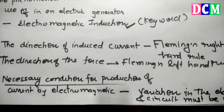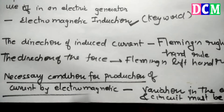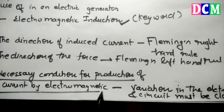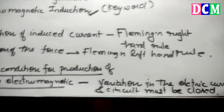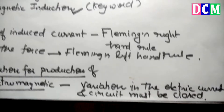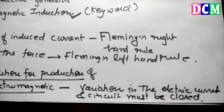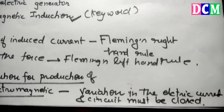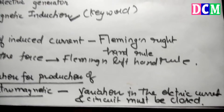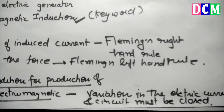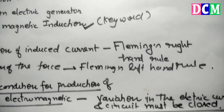The necessary conditions for the production of current by electromagnetic induction are: variation in the magnetic flux and the circuit must be closed. Variation is very important, otherwise current is not produced. These are frequently asked short questions.